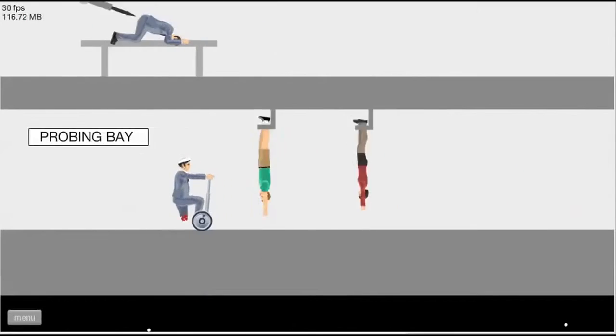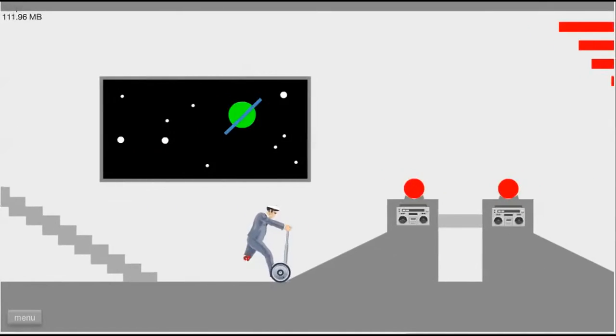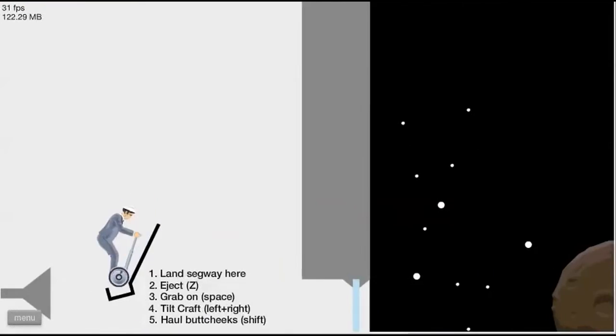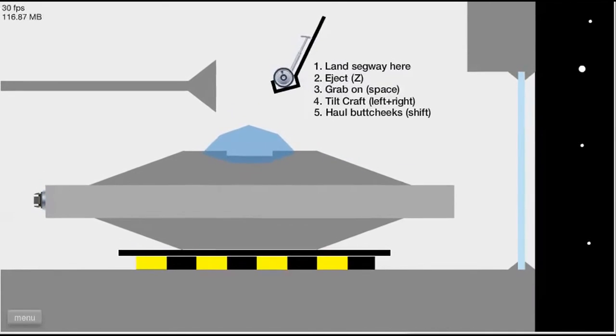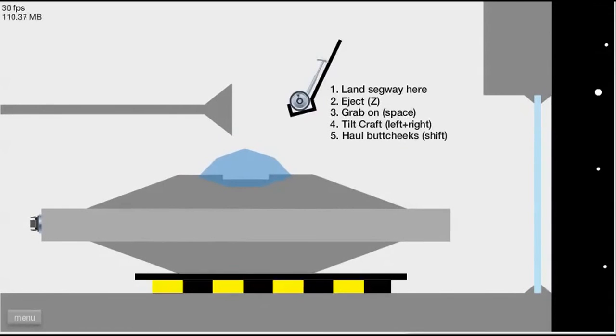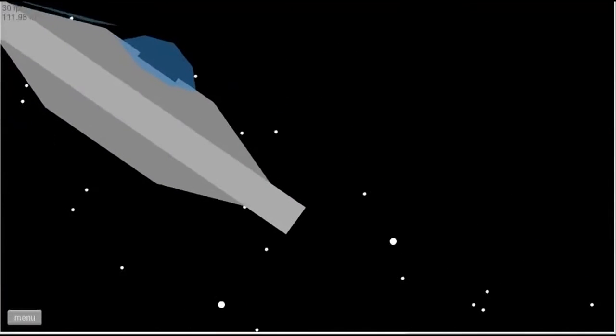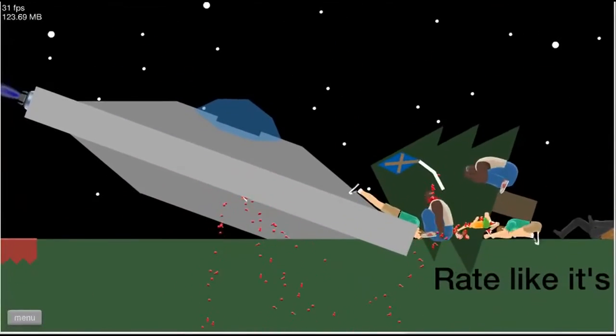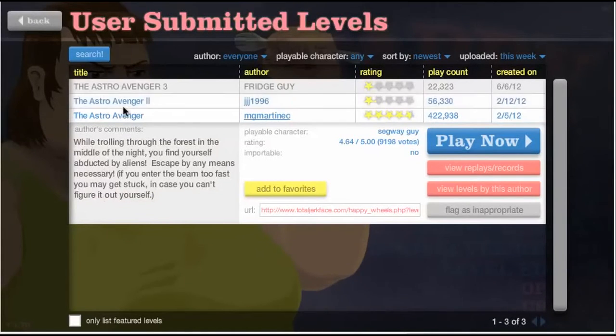Probing bay. Okay. Emergency saucer. No narrow escapes. Zed. And grab on. Space. And hull buttcheeks. Shift. Oh god. Okay then. I think the kid died, but that doesn't matter, cause I made it to the end.